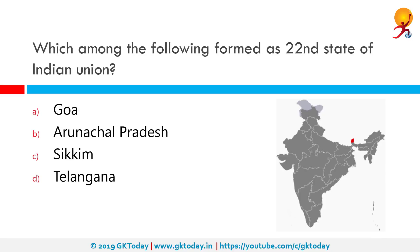Which among the following formed the 22nd state of the Indian Union? The correct answer is Sikkim. Sikkim emerged as India's 22nd state on 26th April 1975. The Sikkim State Day is observed on 16th May every year, because this was the day when the Chief Minister of Sikkim assumed office.